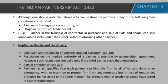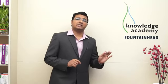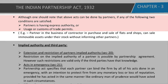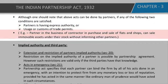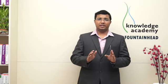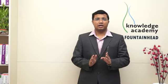The above acts can be done if any of two conditions are satisfied: the partner has express authority to do so, or usage or custom of trade permits it. For example, a partner in the business of a contractor in purchase and sale of flats and shops can sell immovable assets under their stock without informing other partners — but only if they are dealing in that specific type of contract and are in the field of real estate.